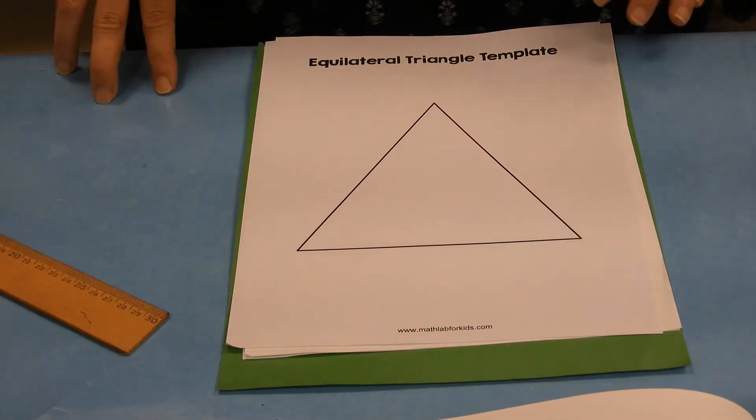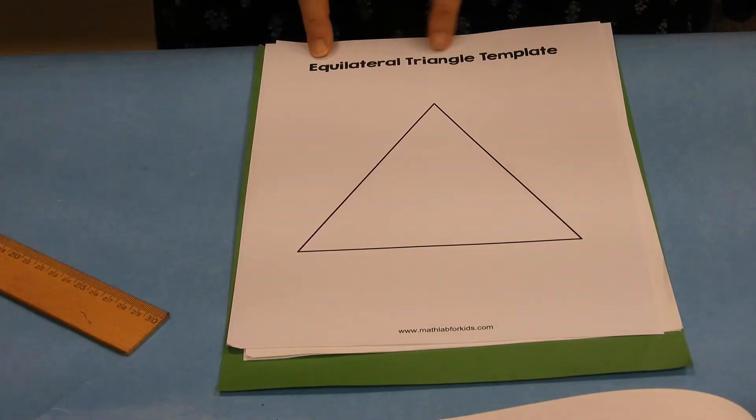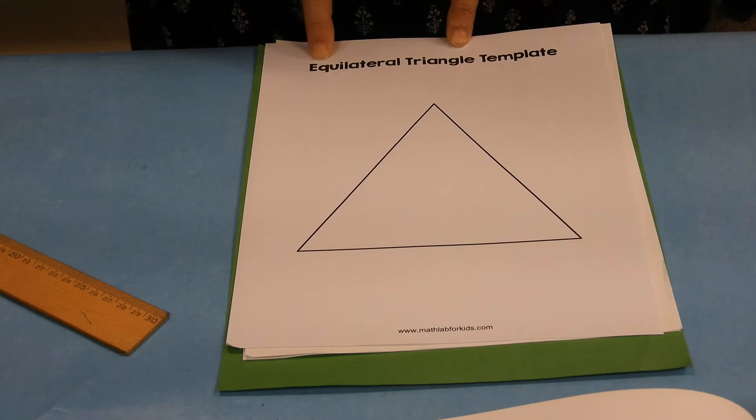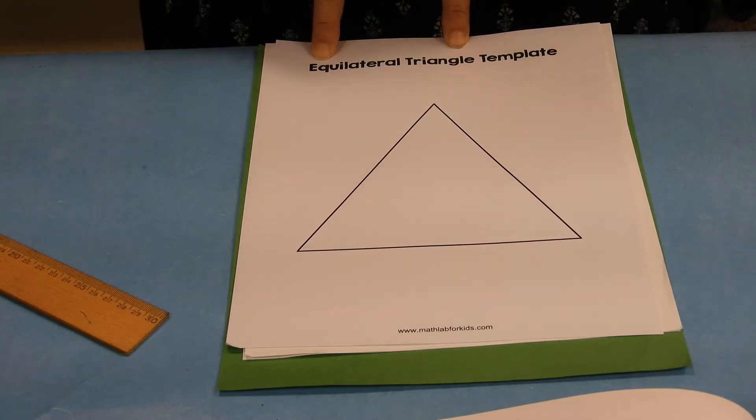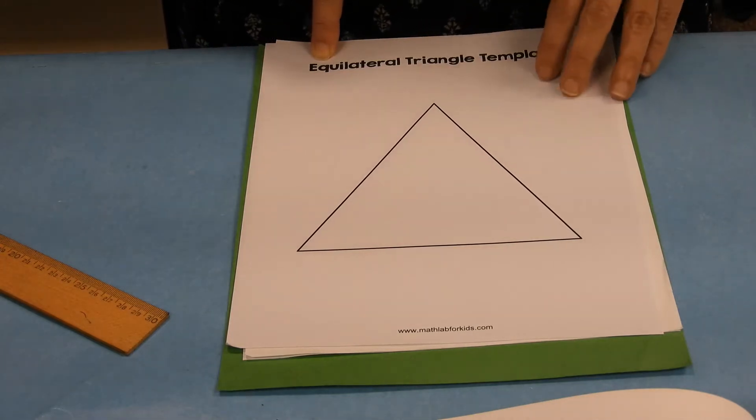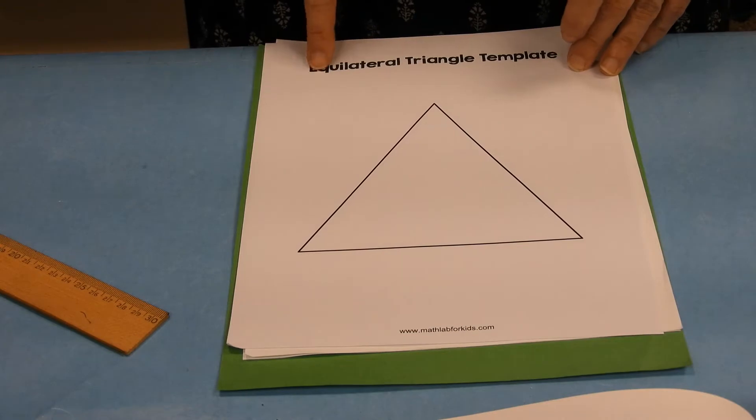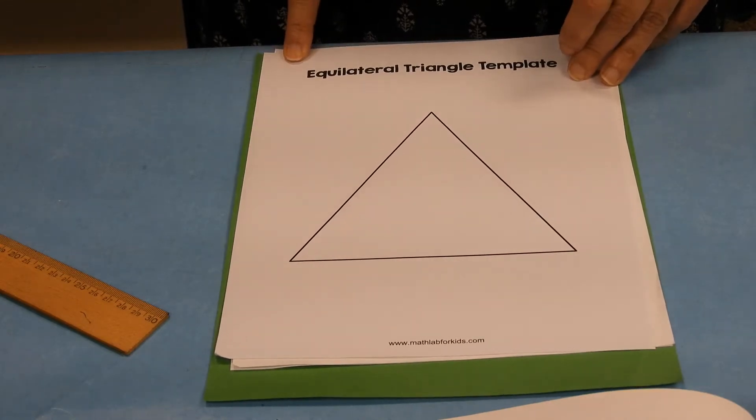Inside your packet you should have an equilateral triangle template. Now you could look online or check out a book, or maybe your parents remember from geometry, and figure out how to draw an equilateral triangle using a string, a ruler, and a pencil. But we just thought we'd save some time by using this handy dandy equilateral triangle template.